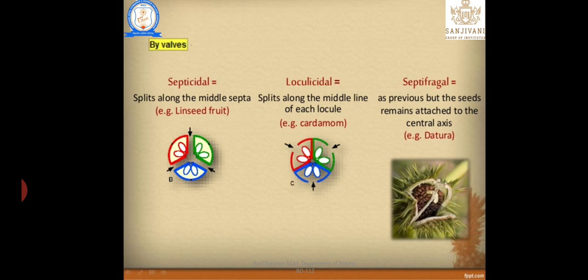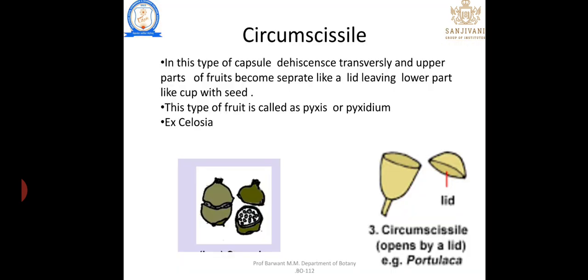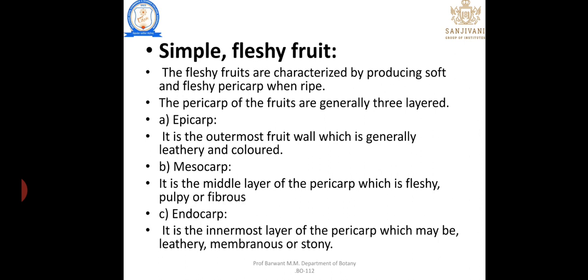Circumscissile — the capsule dehisces transversely and the upper part of the fruit separates like a lid, leaving the lower part like a cup with the seed. This type of fruit is called a pyxis or pyxidium. In the figure we can see the upper part removed like a lid and the seed coming outside.